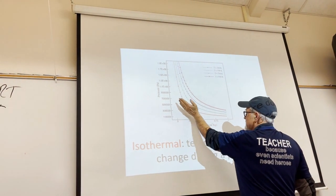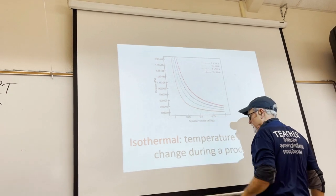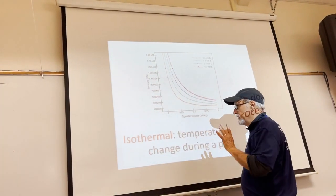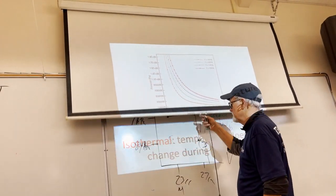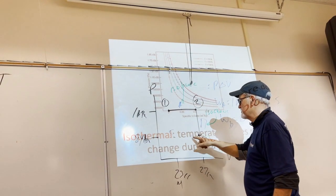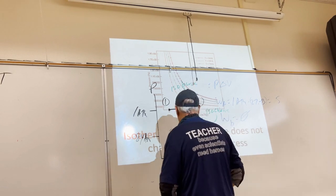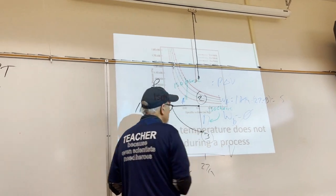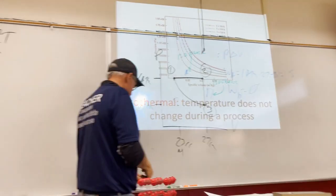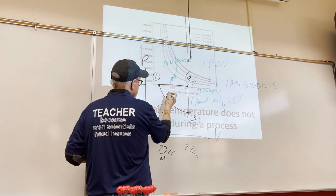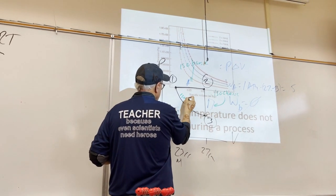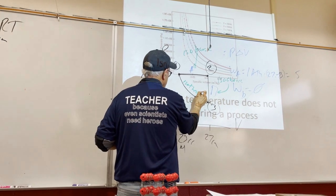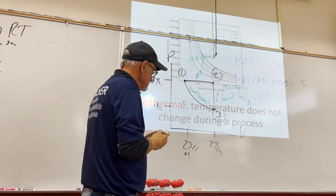The closer the isotherm is to the origin, the lower the temperature; the farther away, the higher. We connect state three to state one by drawing an isotherm — it has to be a curve, not a straight line.